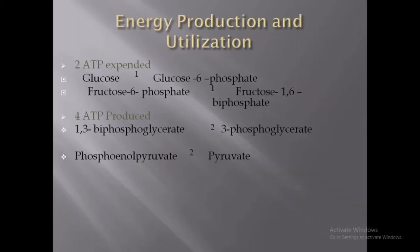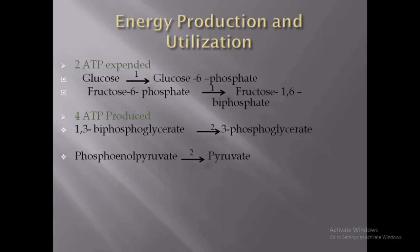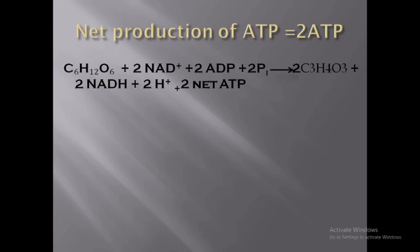Regarding energy production and utilization during glycolysis: 2 ATP are expended and 4 ATP are produced. During the conversion of glucose to glucose-6-phosphate, 1 ATP is expended, and during the conversion of fructose-6-phosphate to fructose-1,6-bisphosphate, 1 ATP is expended — giving a total of 2 ATP expended. Meanwhile, 2 ATP are produced during the conversion of 1,3-bisphosphoglycerate to 3-phosphoglycerate, and 2 ATP are produced during the conversion of phosphoenolpyruvate to pyruvate, giving a net production of 2 ATP during glycolysis.